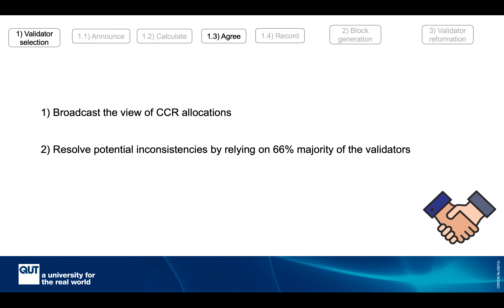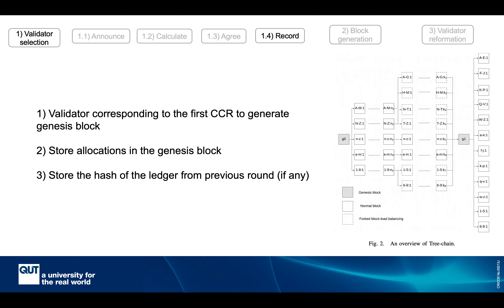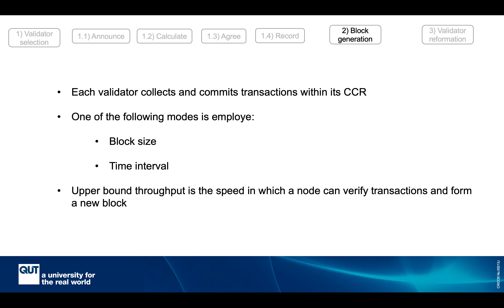The validator with the highest KWM generates a genesis block. In Tree-Chain there are multiple genesis blocks — at the end of each epoch time the network reconfigures and a new genesis block is recorded, containing the CCR allocations and public keys of nodes for the next period. This allows all nodes to verify which validator a transaction belongs to.